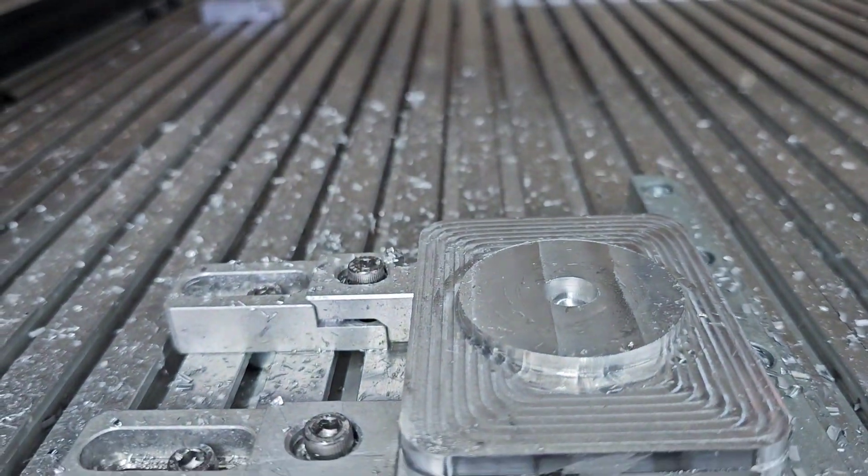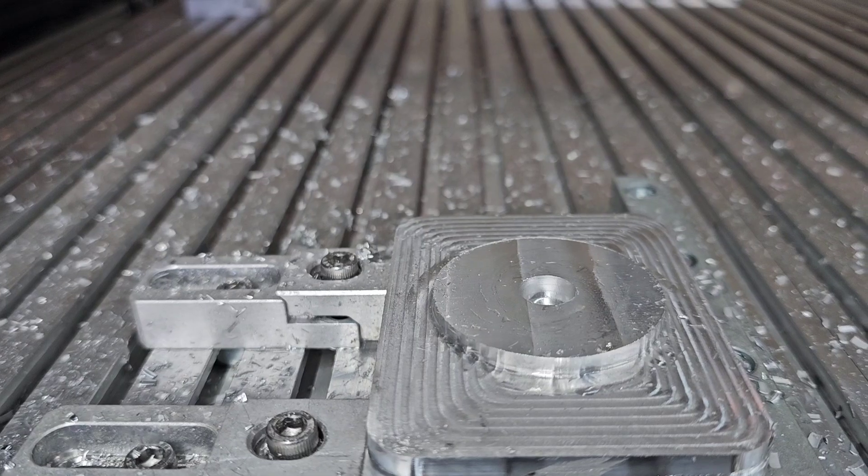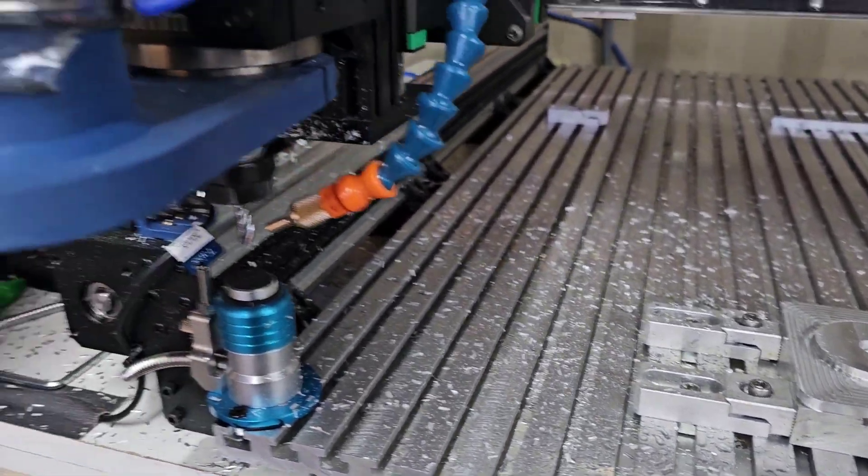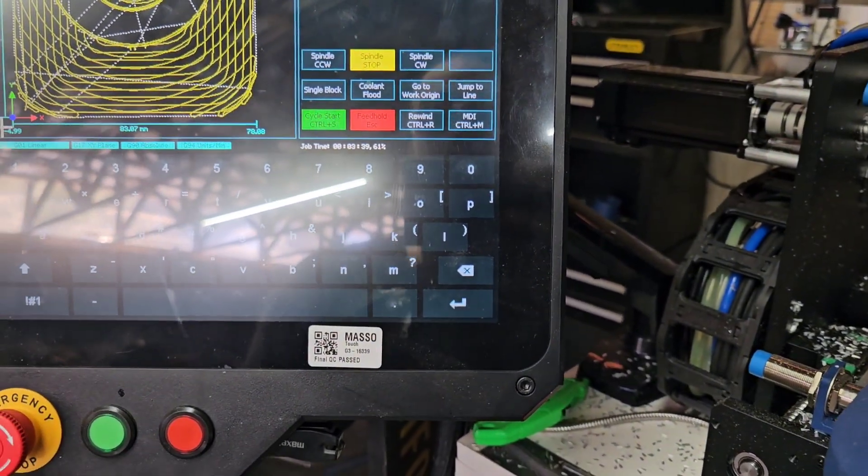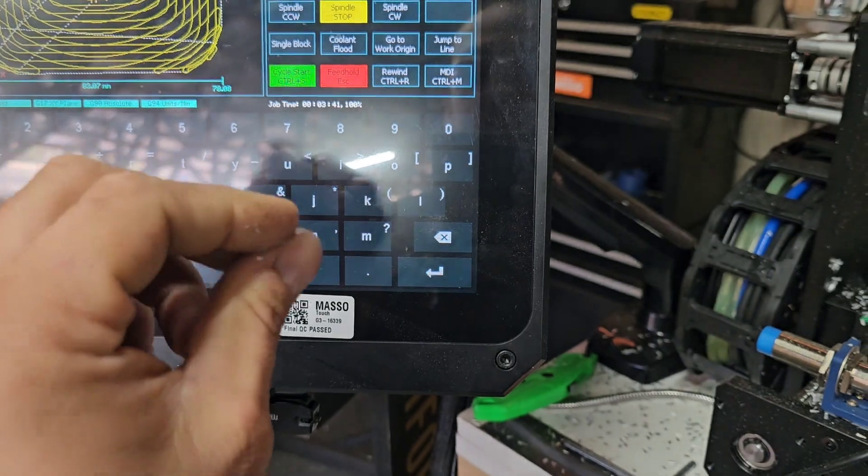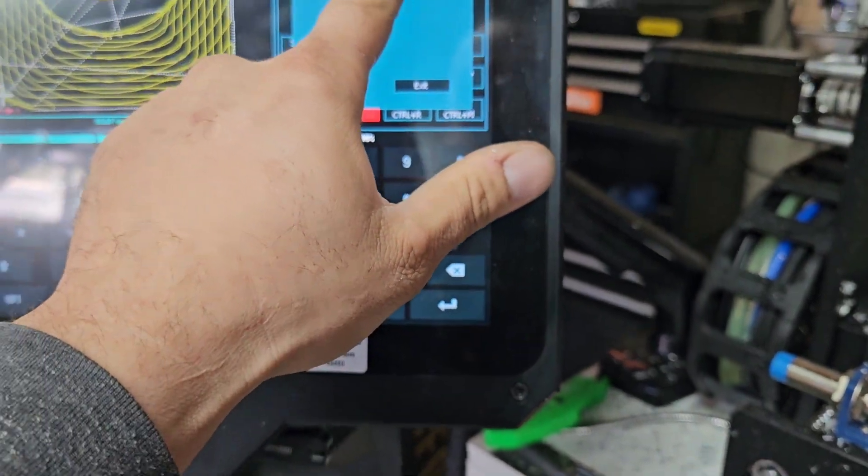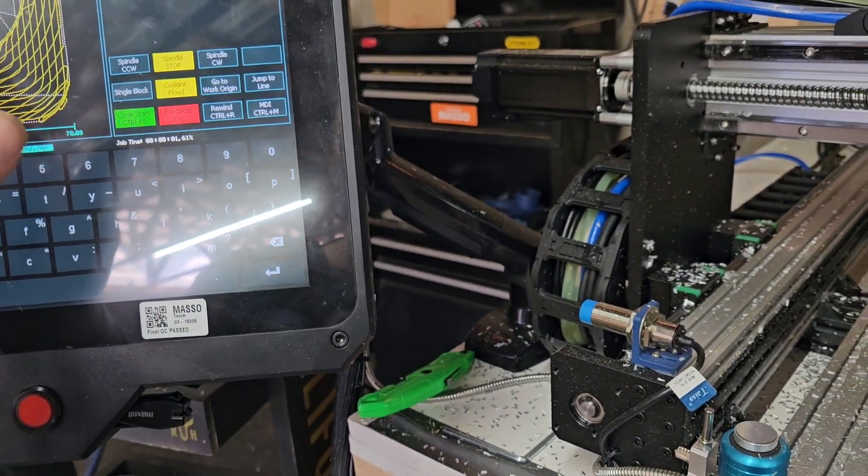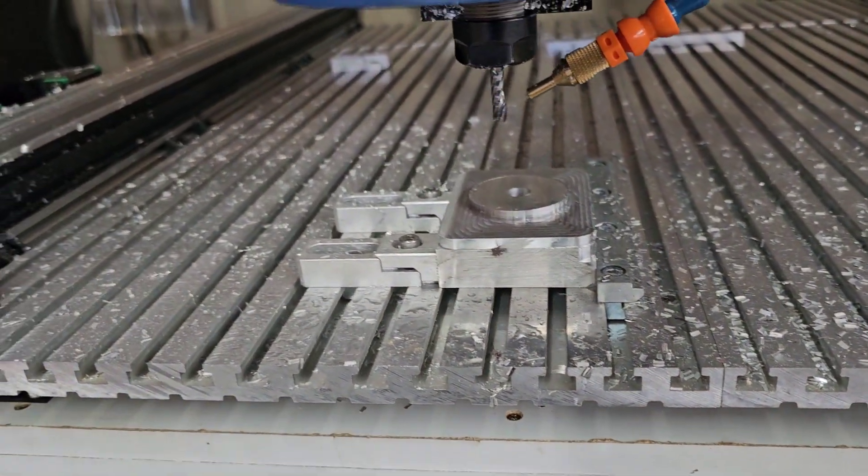Once we get past this point, it's going to do some serious adaptive clearing, which is going to be deep and probably a half inch of flute length. It's going to be pretty heavy. So let's see how that goes. I'm going to go ahead and restart here on the Masso. So we can go to work origin 2071. We'll go to jump to line. We'll start from line and then click run. And it should do its thing.